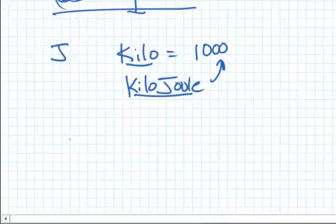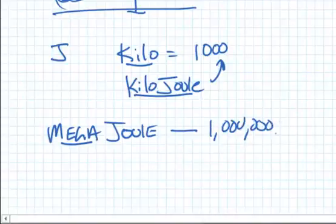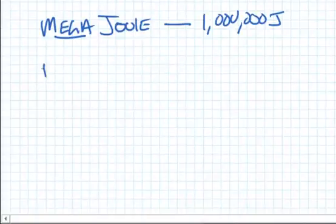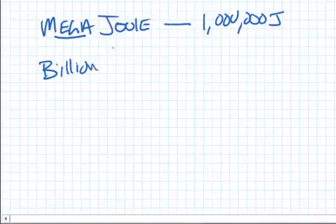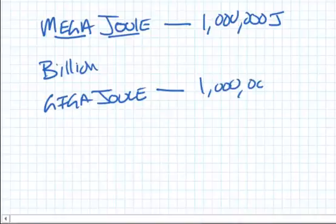Now these prefixes, they change. For example, we can make it even bigger and put the prefix mega. This would be the megajoule, and that is equivalent to one million Joules. And we can make it even bigger. A billion, a billion Joules has the prefix, as you probably have heard this before, giga. So a gigajoule would be a billion Joules.